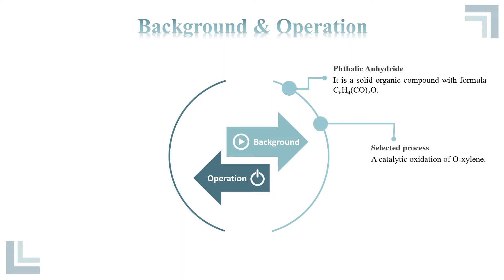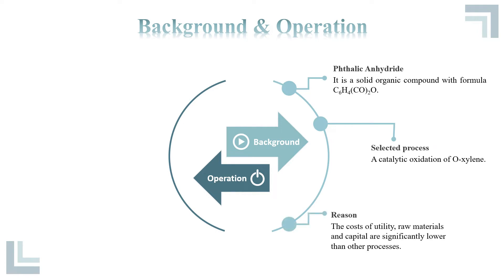The selected process is catalytic oxidation of oxaline to produce phallic anhydride. This process was chosen because the cost of utility, price of raw materials, and capital cost are significantly lower than other processes such as oxidation of natalie.